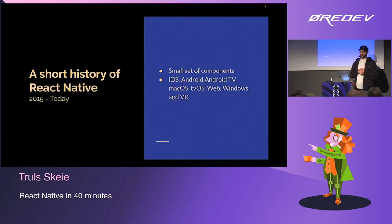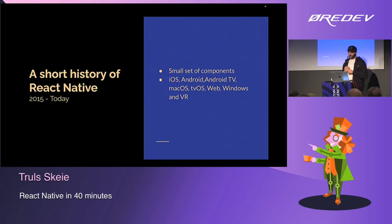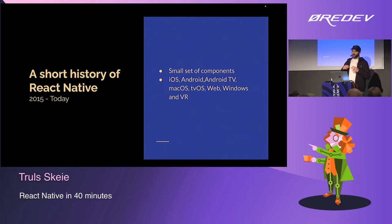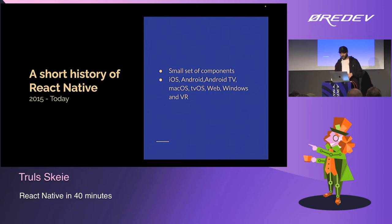In 2015, React Native was first launched for iOS, and a couple of months later for Android. But today you can write React Native on iOS, Android, Android TV, Mac OS, TV OS, Web, Windows, and VR. With the new architecture, they've made the core part of React Native platform agnostic, so you can drag and drop it into any platform that basically runs C++, which is pretty cool.